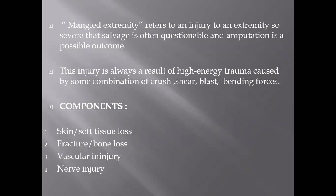Skin and soft tissue loss will be very extensive in mangled extremity. Fracture in the mangled extremity will be highly comminuted. It may be associated with either vascular injury or nerve injury. When three out of these four components are present, it is called mangled extremity.